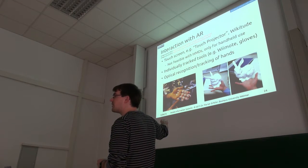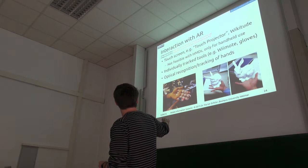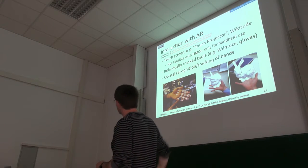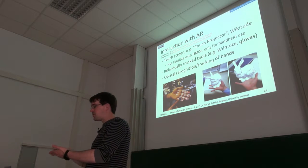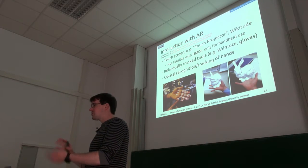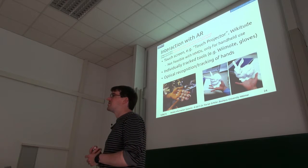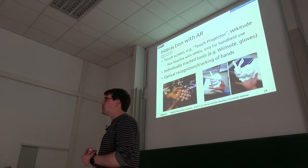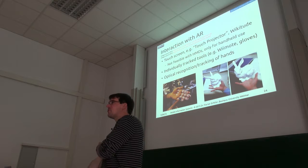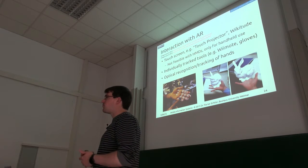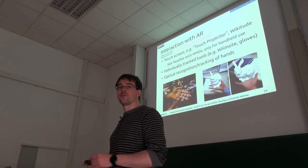This scenario we already looked at is the SixthSense from MIT. You have colored markers on the fingertips which are tracked by the camera and used to interact with content — it's a trick, but it helps to actually interact with the virtual content. This is also spatial augmented reality in the sense that a projector is used to project directly on top of your hand.